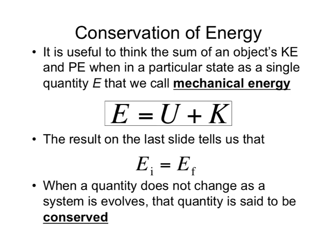Hi again, everybody. Welcome back. We're continuing our chapter 9 on potential energy and conservation of energy. This chapter has two parts: conservative forces, where all energy in the system is conserved, and non-conservative forces. A conservative force is like gravity or springs. A non-conservative force is something like friction or some other external force acting on our system.